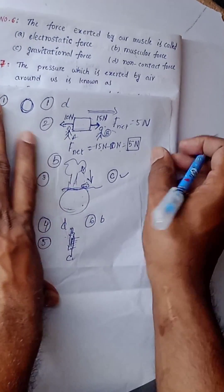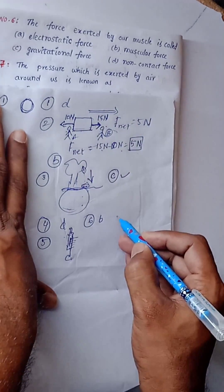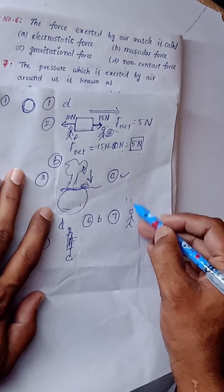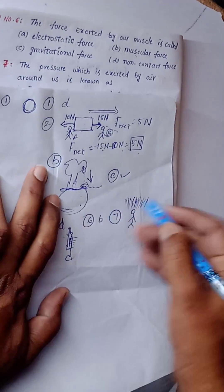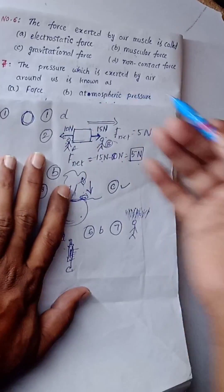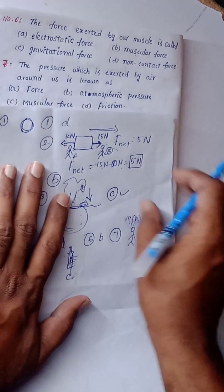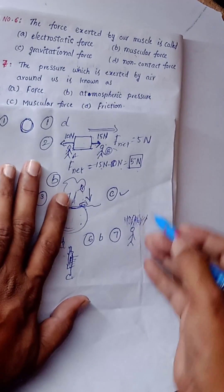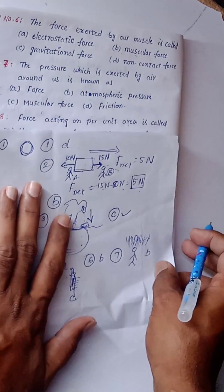Question number 7: The pressure which is exerted by air around us is known as — it is atmospheric pressure. So option B, atmospheric pressure, is the correct answer. Muscular force and friction are not correct.